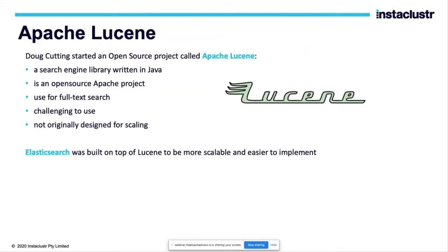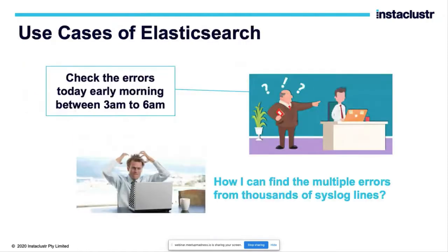Behind the scenes, Elasticsearch runs on Lucene. Lucene is an open source platform written in Java — it's a really powerful search engine. One drawback of Lucene was that it was very challenging to distribute data or integrate with. That's where the Elasticsearch project started back in 2010, where the idea was to take the power of Lucene but make it very easy to deploy and distribute data. From there it kicked in and is now used by big organizations.